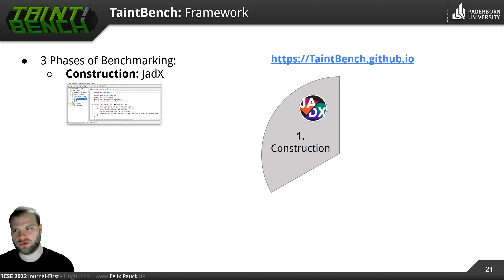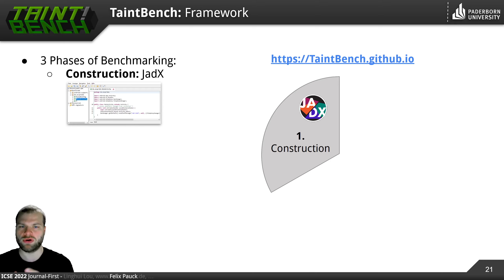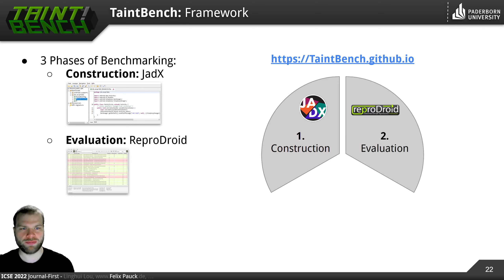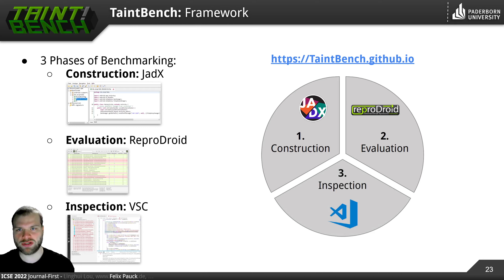The framework supports you during three phases of benchmarking. The first phase is construction — when you want to construct a benchmark, you have to document sources, sinks, and the connections between them, the so-called taint flows. You can do all that via our plugin which we wrote for JUTx. Instead of writing XML code directly, which is a tedious task, you can simply use our extension for JUTx and do it via the GUI. For the evaluation part, the second phase, we extended ReproDroid such that it takes the output of the first phase to create an executable and reproducible benchmark. For the third phase, the inspection phase, you can inspect the ground truth created in the first phase or the results determined in the second phase.